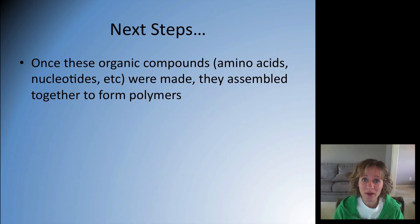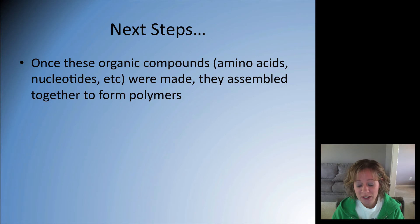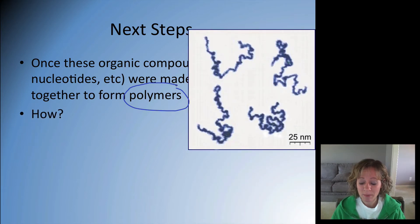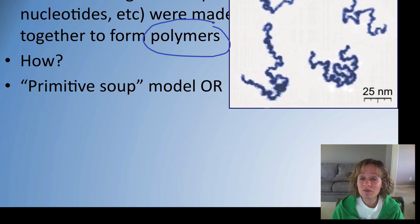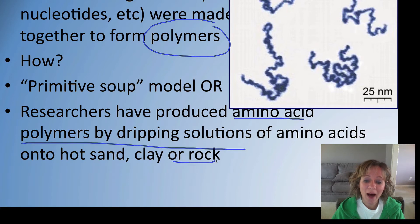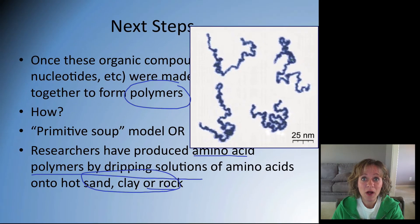What happened next was that these organic compounds — amino acids, nucleotides, and other building blocks — had to be assembled together to form polymers, which are basically stretches of many amino acids or many nucleotides. How did this happen? It could have happened in the primitive soup model on its own, or some scientists hypothesize that these amino acid polymers were created with the help of clay, sand, or rock — that something in that rock acted as an enzyme to catalyze the reaction from building block to polymer.